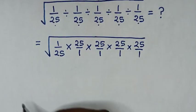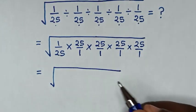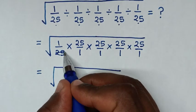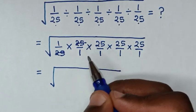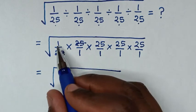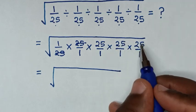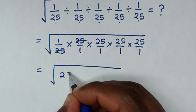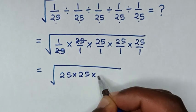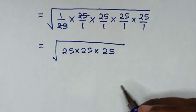In the next step, it will be equal to the square root of — this 25 will cancel this 25 — so it will be 1 times 25 times 25 times 25.